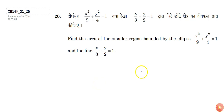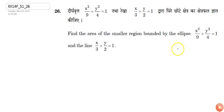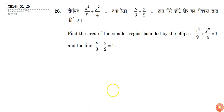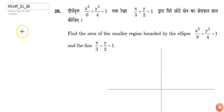To solve this question, first we shall draw the given ellipse and the line on the x-y plane. I am just drawing this. Let's say this is the x-y plane, this is the positive x-axis, and this is the positive y-axis.